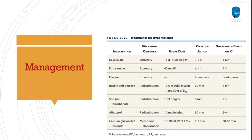For management, we have three lines: cardiac membrane protection, intracellular shift, and excretion of potassium. For excretion, we use Kayexalate and furosemide to excrete potassium via the kidneys, which will reduce the potassium level. For intracellular shift, insulin and glucose can cause intracellular shift and correct the potassium. We also have sodium bicarbonate and the inhaled beta-agonist albuterol as agents for intracellular shift.